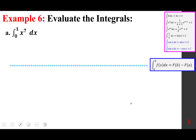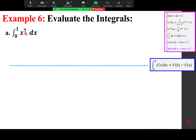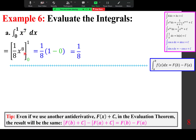A definite integral results in a number. Integrate x⁷ to get (1/8)x⁸, evaluated from 0 to 1. Plugging in 1 gives 1; plugging in 0 gives 0. Answer: 1/8. Note: even if you include a constant C in the antiderivative, it cancels when you compute F(b) + C − (F(a) + C), leaving F(b) − F(a).